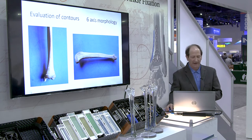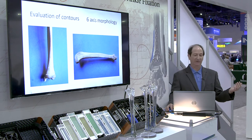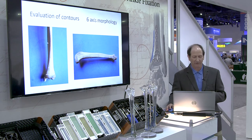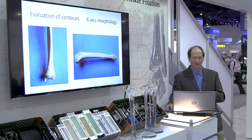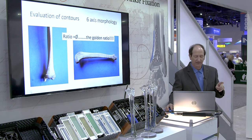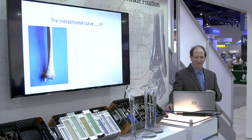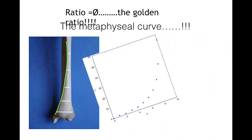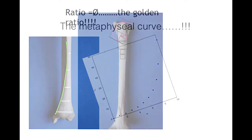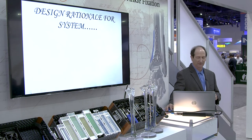If you draw lines and measure the contours, the ratio comes out to the Fibonacci golden ratio — it's a perfect Fibonacci progression. You can overlay the Fibonacci spiral and it matches perfectly, no matter what contour you measure. Whether it goes up or down, it's the same ratio. Laying the Fibonacci spiral over metaphyseal bone — whether proximal tibia, distal tibia, or femur — it matches exactly. The ratios are exactly the same, and that is the design rationale for the system.